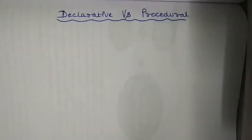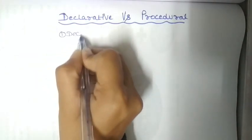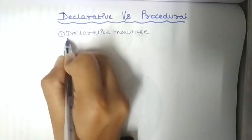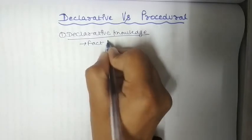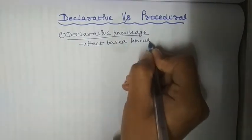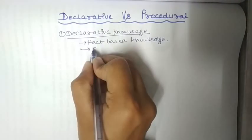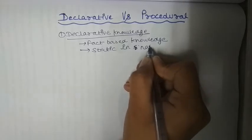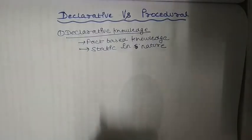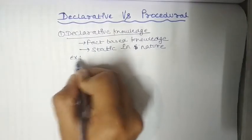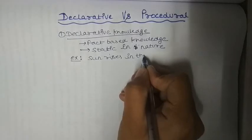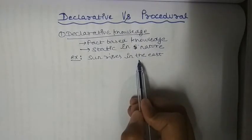In this video I will explain declarative and procedural knowledge. Declarative knowledge is fact-based knowledge. It is always stating in nature — we can't change it. A real life example is: the sun rises in the east. This is declarative knowledge because it is a fact and it is always stating in nature.